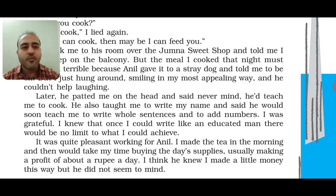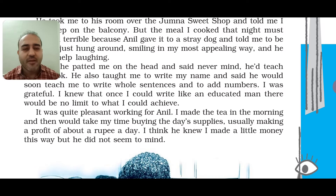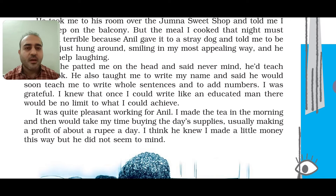It was quite pleasant working for Anil. Hari made the tea in the morning and then took his time buying the day's supplies — vegetables and everything needed for cooking. He was usually making a profit of about one rupee a day by skimming from the grocery money. Hari thought Anil might have known, but he didn't seem to mind and never scolded him for it.